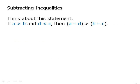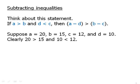Think about this statement. If a is greater than b and d is less than c, then a minus d is greater than b minus c. Let's do a numerical example. Suppose a equals 20, b equals 15, c equals 12, and d equals 10. Clearly, 20 is greater than 15. Clearly, 10 is less than 12. And when we subtract, we get 10 is greater than 3.